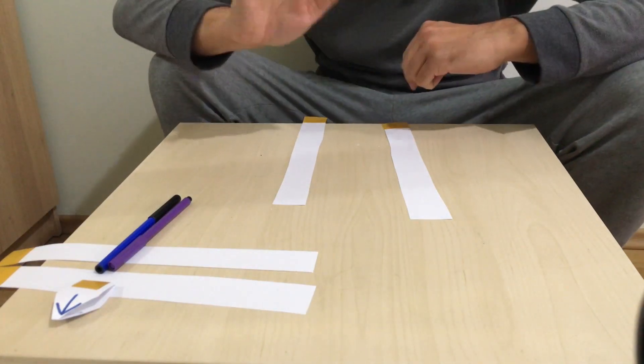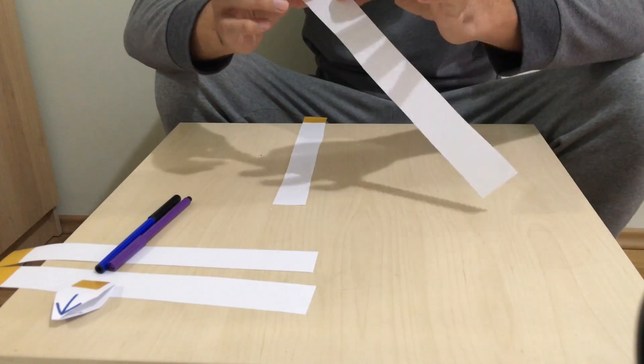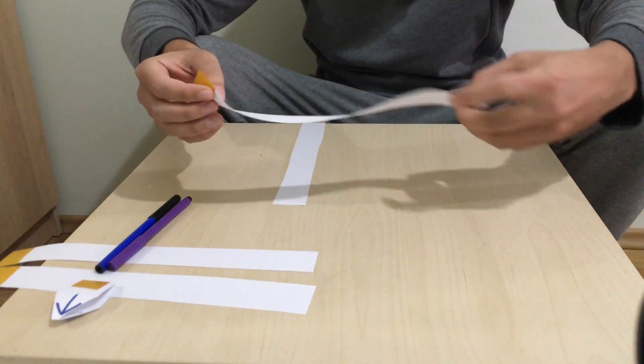Hello everyone! Today we are going to do topological mathematics. I have a stripe that has two sides, forward and backward.